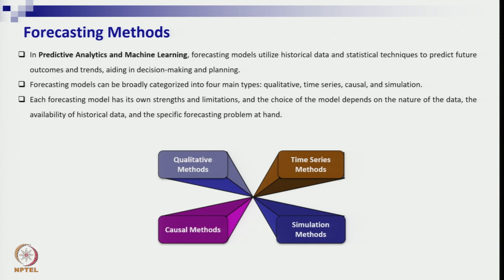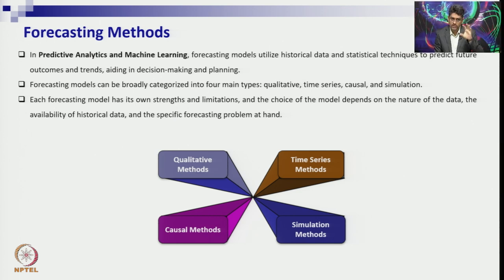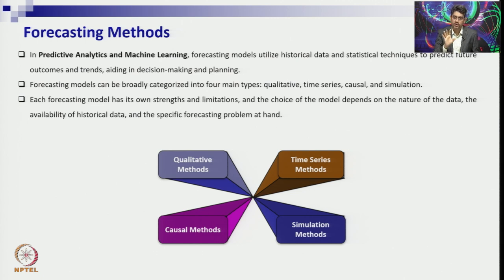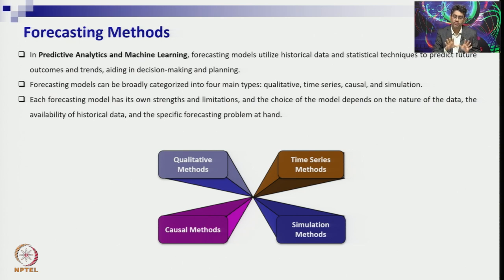In predictive analytics and machine learning, all four forecasting method categories are important. The first is qualitative methods, which we will discuss today. The second is time series methods, the third is causal or econometric/regression models, and the fourth is simulation models. This course will cover all four — today focusing on qualitative methods, then time series, causal models, regression, and simulation including Monte Carlo simulation and system dynamics.